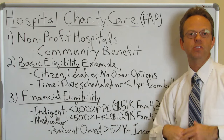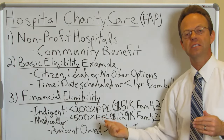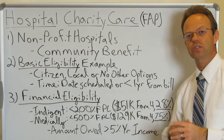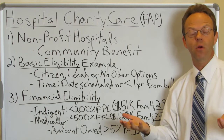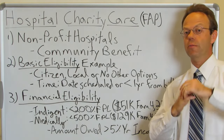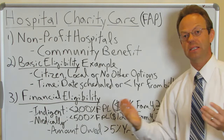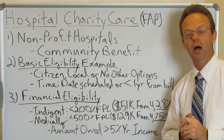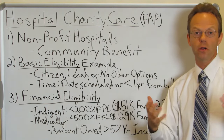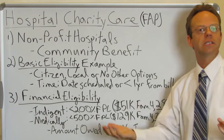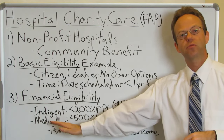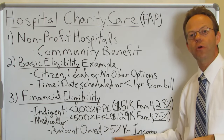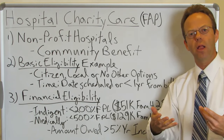For financial eligibility, you need to provide documentation. If you're indigent — making less than 200% of the federal poverty limit, which is $51,000 for a family of four — then you would qualify to have your hospital bill paid for. That includes the remaining balance after insurance pays. 28% of American households make less than $51,000. So if you're an employer, you probably have some employees who fit into this situation. If you make more than 200% of the FPL, you can qualify as medically indigent: if you make less than 500% of the federal poverty level — $129,000 for a family of four — and the amount you owe is greater than 5% of your annual income.